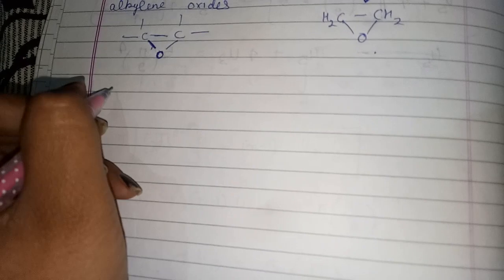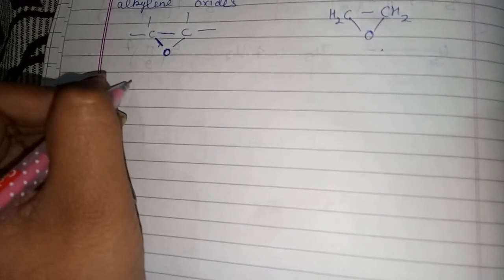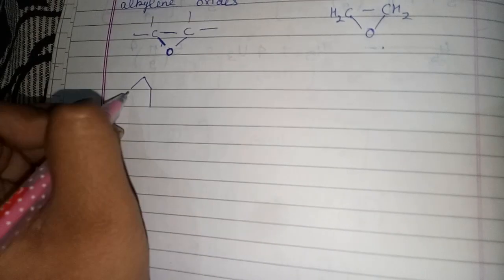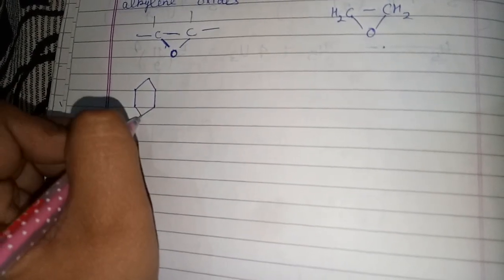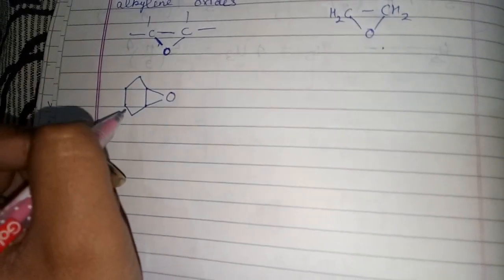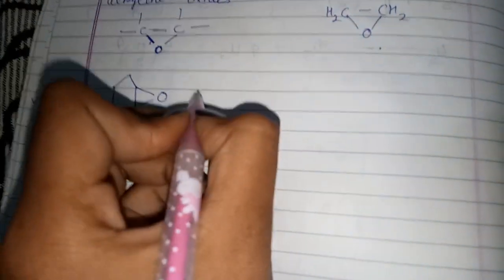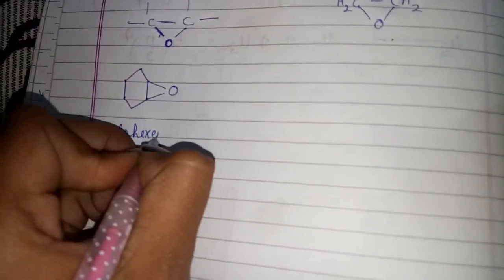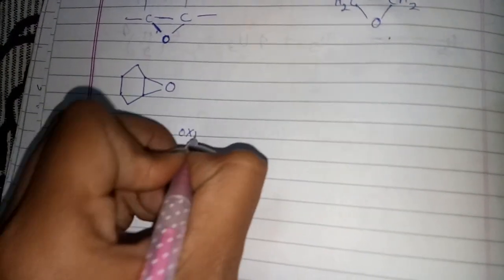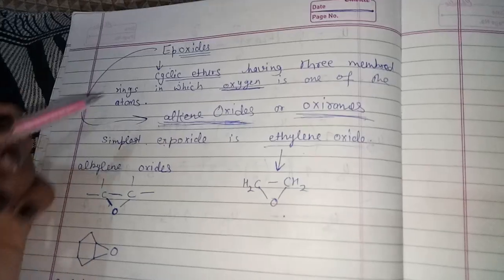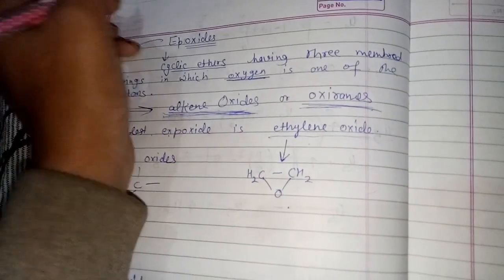I also have cyclohexene oxide. Here is the structure of cyclohexene oxide — this is called cyclohexene oxide. This was the introduction of epoxides.